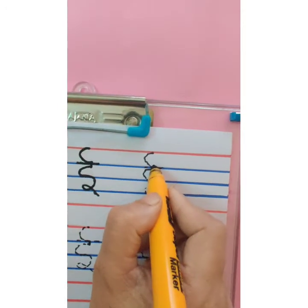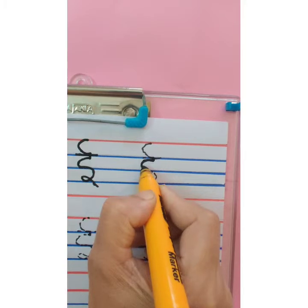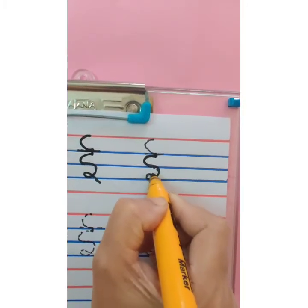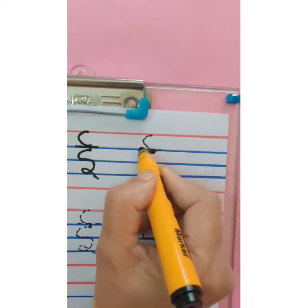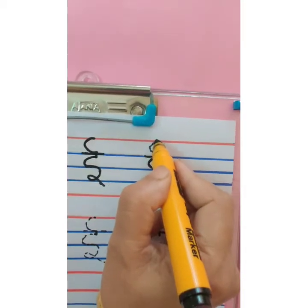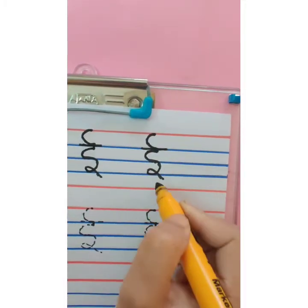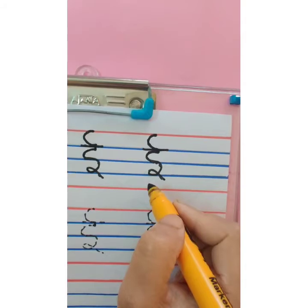One more time. Start with the first blue line, small standing line. Make a c, then ulta c. Take a loop. Overhead small sleeping line. This is chhoti e. And an overhead small c from red line to first blue line, like this. This is badi e.